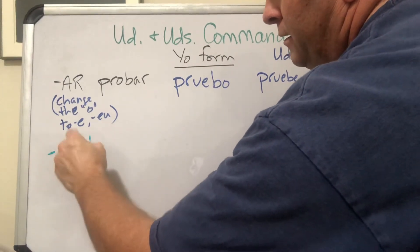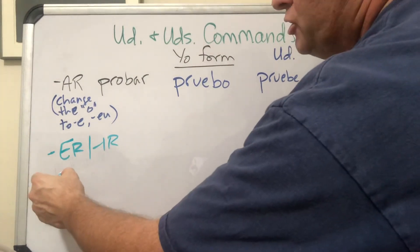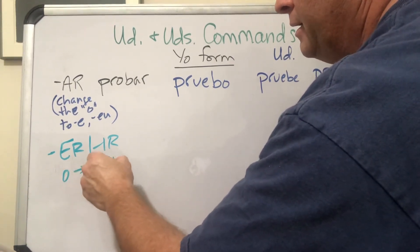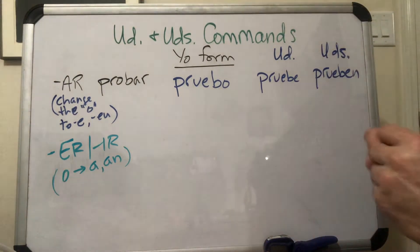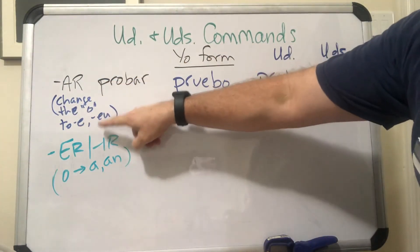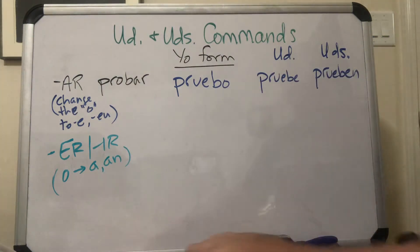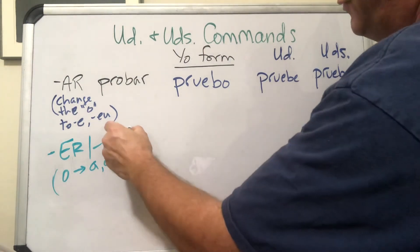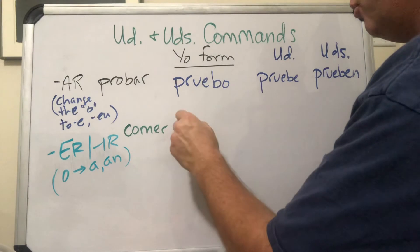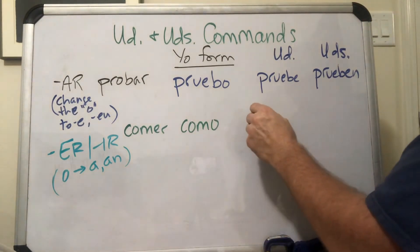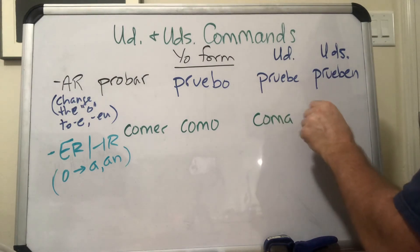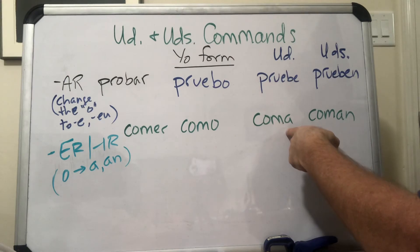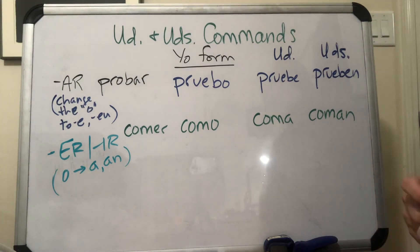For ER and IR verbs, we're going to use AR endings instead. Let's do the verb 'comer,' to eat. The yo form is 'como,' and then the usted command is 'coma.' For example: 'Coma las verduras' — eat your vegetables.